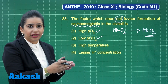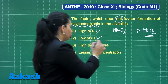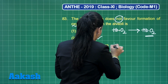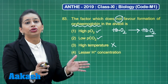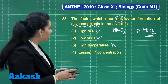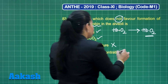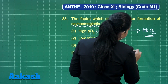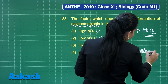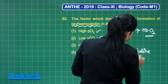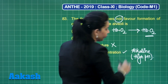When the partial pressure of carbon dioxide is low, it is going to promote their binding. High temperature — no, this is wrong. High temperature is going to promote the dissociation of oxyhemoglobin. Lesser hydrogen ion concentration — yes, this is again true. Lesser hydrogen ion concentration means the medium will become alkaline, meaning there will be a high pH.